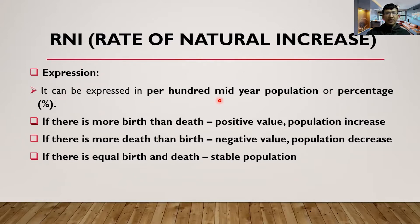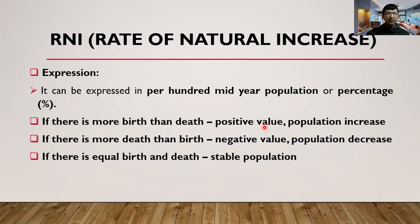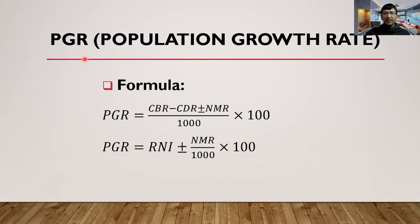RNI can be expressed as a percent or per 100 mid-year population. There are three conditions: if births exceed deaths, RNI is positive — meaning population is increasing; if deaths exceed births, RNI is negative — meaning population is decreasing; if births and deaths are equal, the population is stable.